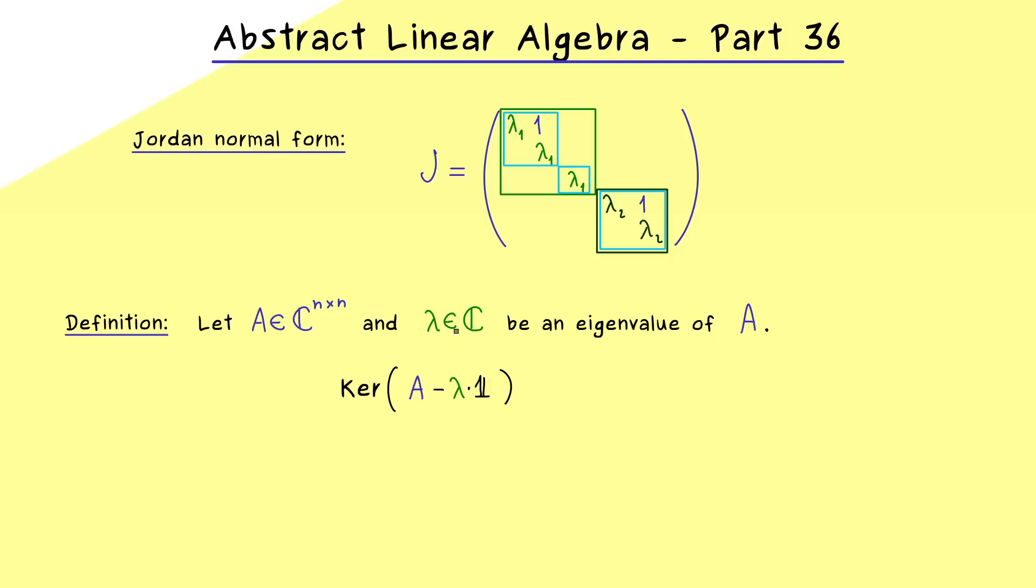And there it could happen that the dimension of this space could be less than the algebraic multiplicity of lambda. And indeed in this case we immediately know that A is not diagonalizable. And therefore the natural question would be, can we increase this dimension when we consider powers. And as we will see soon, this is actually the correct step into the direction of the Jordan normal form.